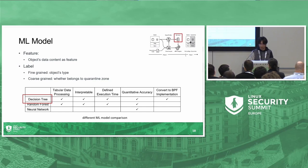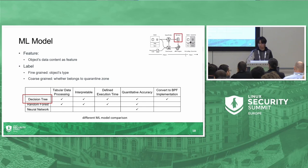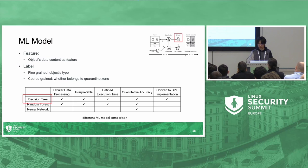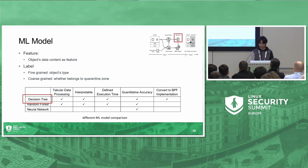We use the object data content as the feature and its type — and whether it belongs to the kernel — as the label. For the machine learning model, we choose the decision tree for the following reasons: decision trees perform better on tabular data compared to deep learning models; they are interpretable; and once trained they have a fixed depth, ensuring execution time will not exceed a fixed value, which is crucial for Linux kernel runtime efficiency. Since we use integers as features, the decision tree can run with threshold comparisons, and compared to random forest it can be relatively easily converted to a BPF implementation.